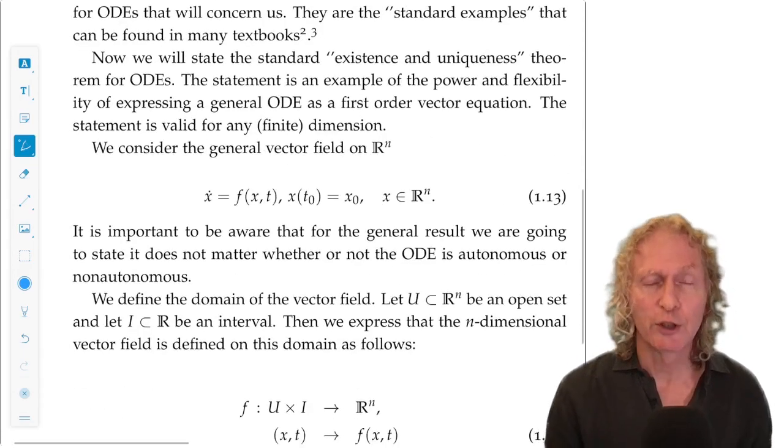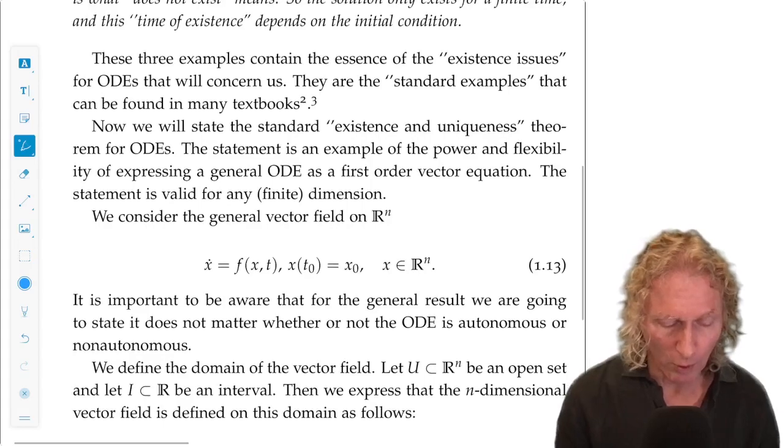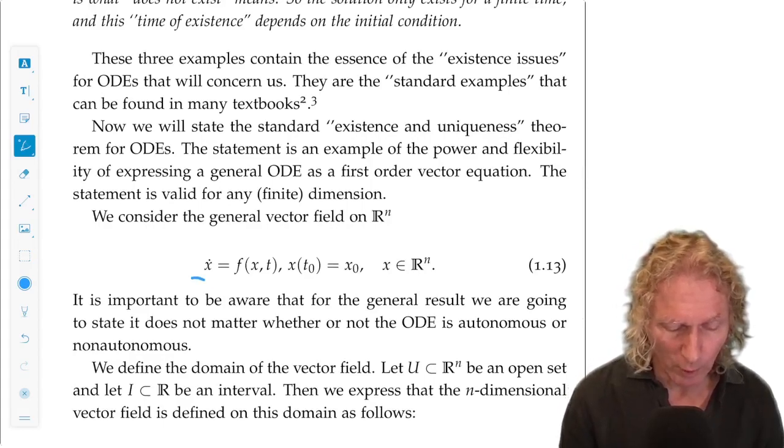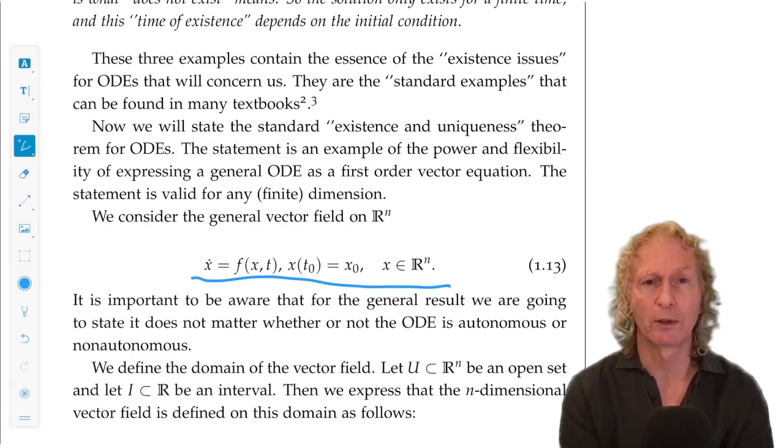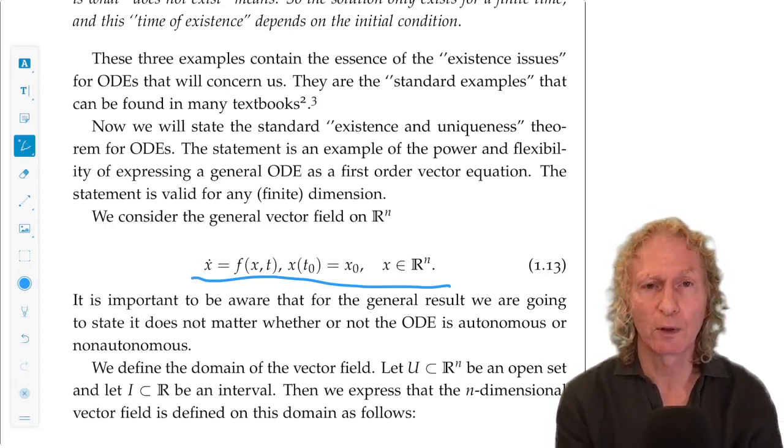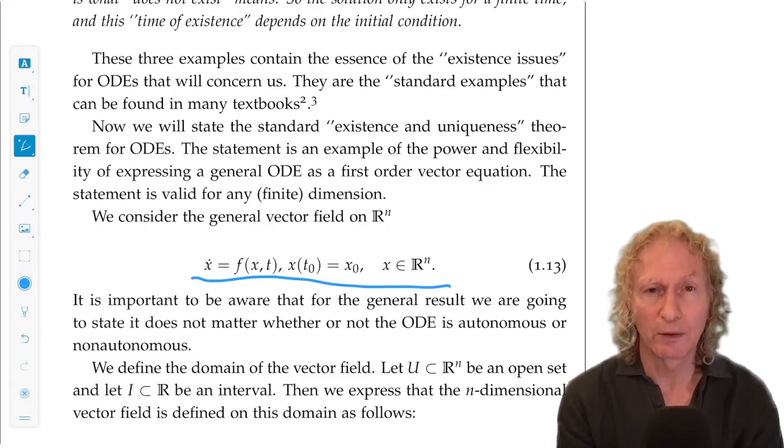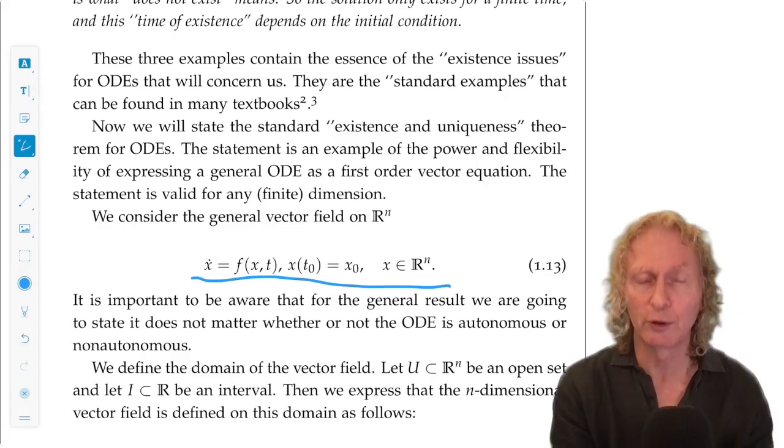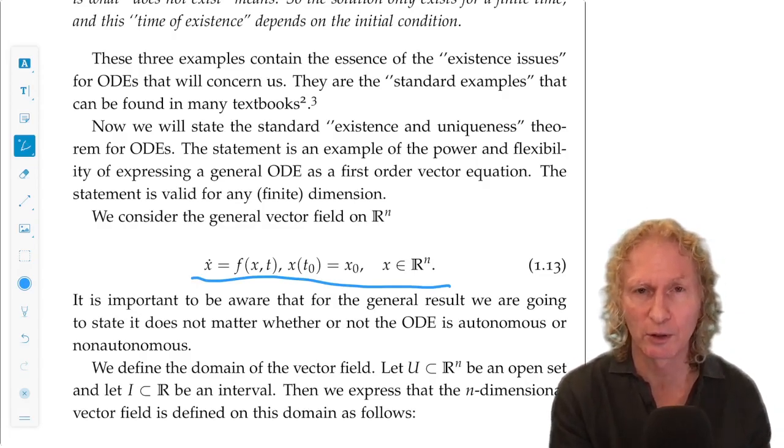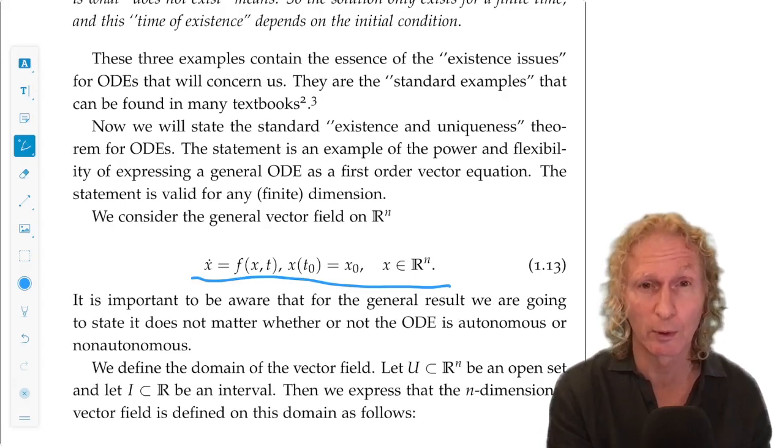So, there's a general theorem for the general form of the equation that we're considering. And it says that if the vector field F(x,t), its derivatives exist, derivative with respect to x and time, these are sufficient conditions. You can weaken them, but for our purposes, we just need sufficient conditions because they're going to let us do everything we want to do.